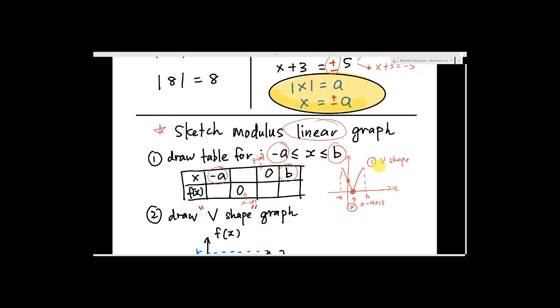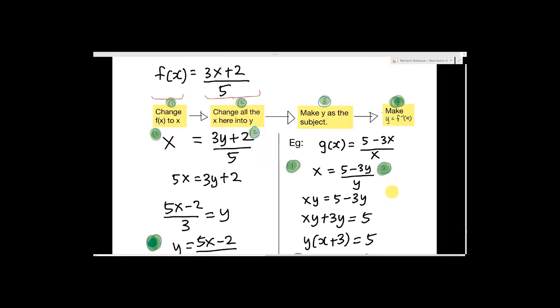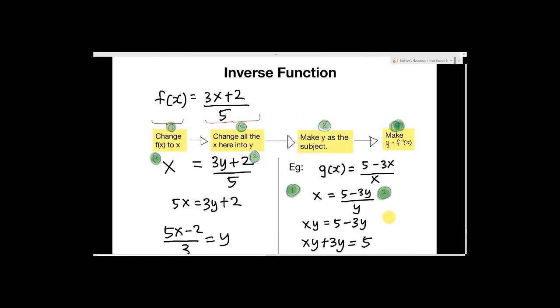Inverse function - I've tried many inverse function methods with X and Y substituting here and there, and I find this method quite easy. The first thing is you change the F(x) - when you see F(x), you change it into X. Or if you see G(x), you change to X. Any function like G, F, or H, you change it into X.